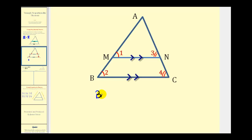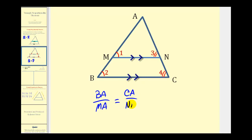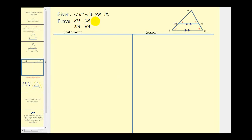So the length of BA to the length of MA equals the length of CA to the length of NA. Then, in order to get the ratio to contain BM and MA, we'll use the Segment Addition Postulate and perform substitution. We're given triangle ABC with segment MN parallel to segment BC, and we want to prove that the length of BM to MA equals the length of CN to NA.